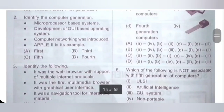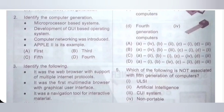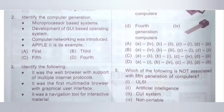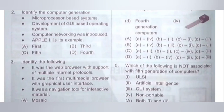2nd question: Identify the computer generation. 1. Microprocessor-based system. 2. Development of GUI-based operating system. 3. Computer networking was introduced. 4. Apple II is its example. Options: A. 3rd; B. 5th; C. 4th. As we discussed earlier, processors were used in 4th generation. So option D is the correct answer.